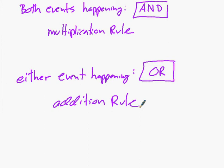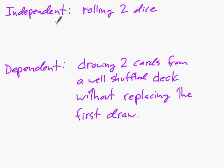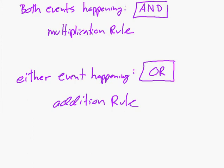It gets a little complicated because we have AND and OR, and we also have independent and dependent, so there are a number of combinations to worry about. When we talk about AND, the events could be independent or dependent. When we talk about OR, we can talk about being mutually exclusive or not.